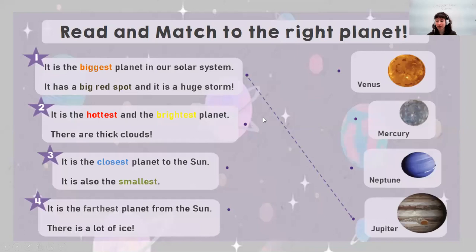And then we will go to the next part. On the bottom here, we are doing some matching. So the number one says, it is the biggest planet in our solar system. It has a big red spot and it has a huge storm. So do you remember which one this is? Was it Venus, Mercury, Neptune, or Jupiter? The answer is here, right?